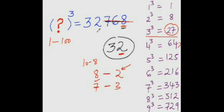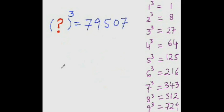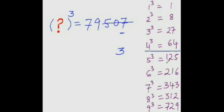Let's practice more examples. Find the cube root of 79,507. Look at the last digit — it is 7, which is part of a conjugate pair. The conjugate of 7 is 10 minus 7, which is 3. So write 3 here and strike out the last three digits. The number left is 79. The number whose cube is nearest to 79 is 4, because 5 cubed is 125, which is more than 79. So the answer is 43.